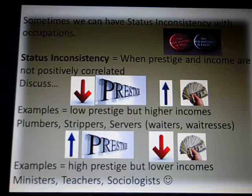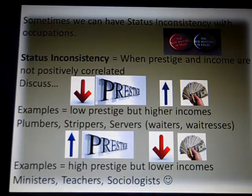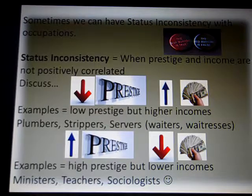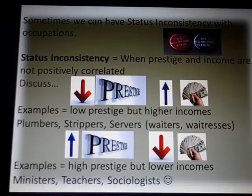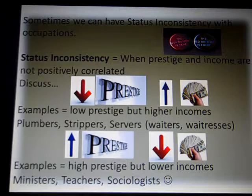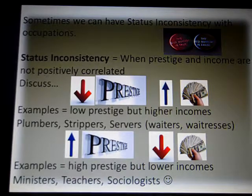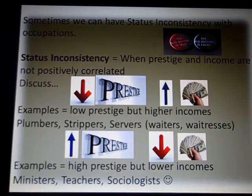Sometimes we have status inconsistency — sometimes prestige and income are not positively correlated. Sometimes there are jobs that offer low prestige but pay higher incomes. Examples include plumbers, strippers, and servers — waiters or waitresses. As a society, we tend to look down on these professions and think, who wants to be a plumber? Servers and waitresses — we tend to think these are menial jobs and just not that prestigious.